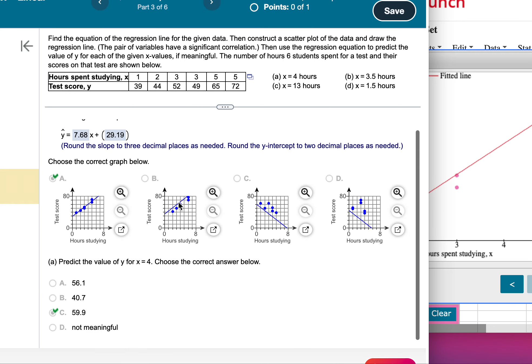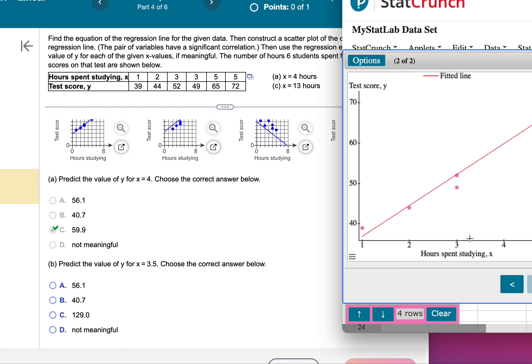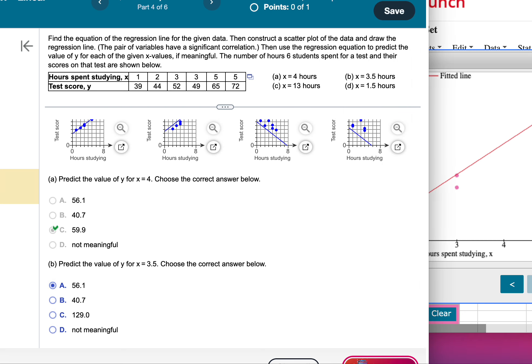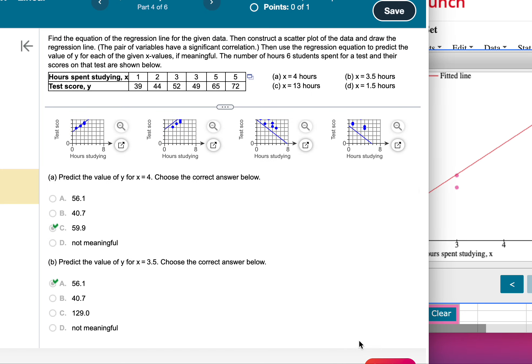Okay, next one is 3.5. So this seems to work here. Grab about there, 3.5. I'm just going up to the line. Looks like that's pretty close to the middle between 50 and 60, so I'm going to go with 56. The next one...